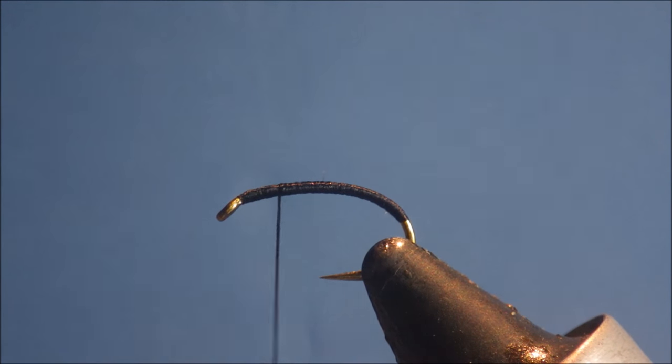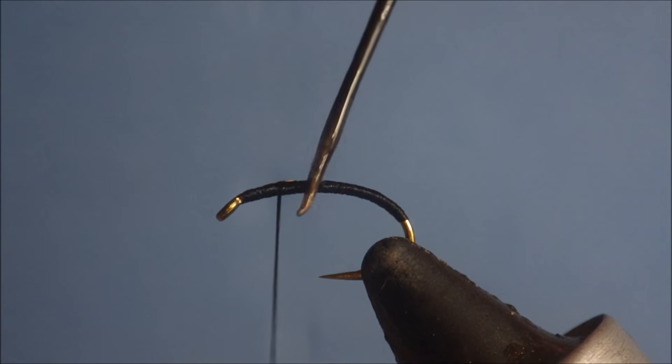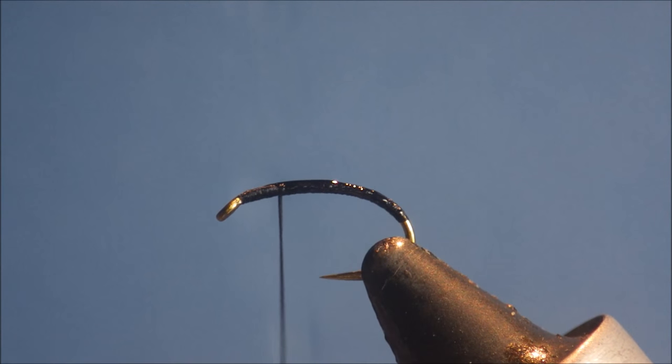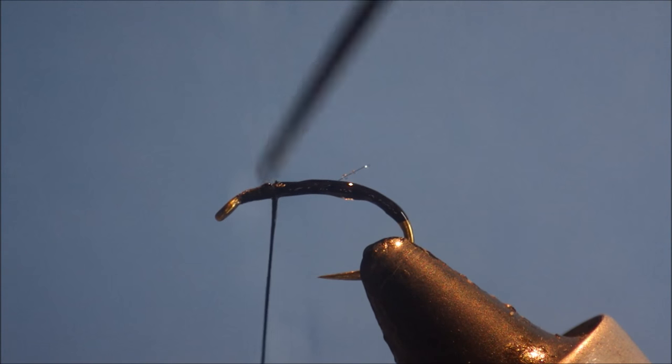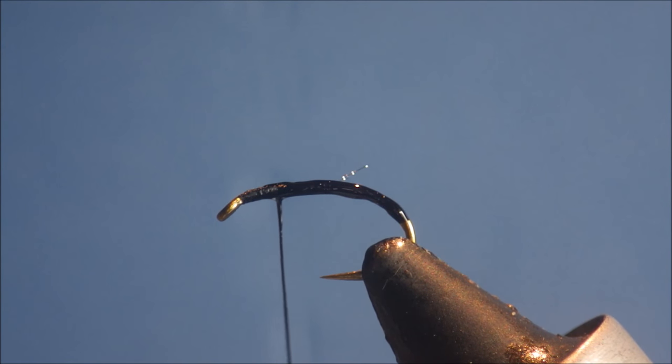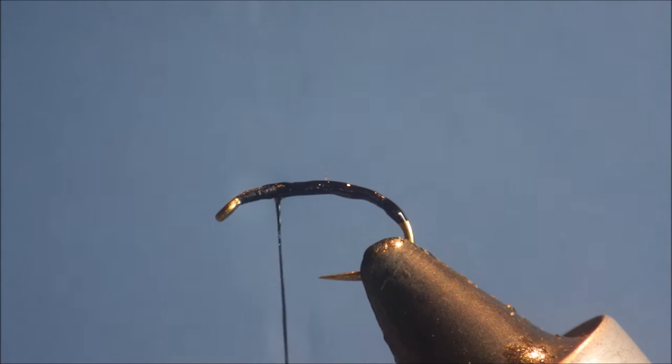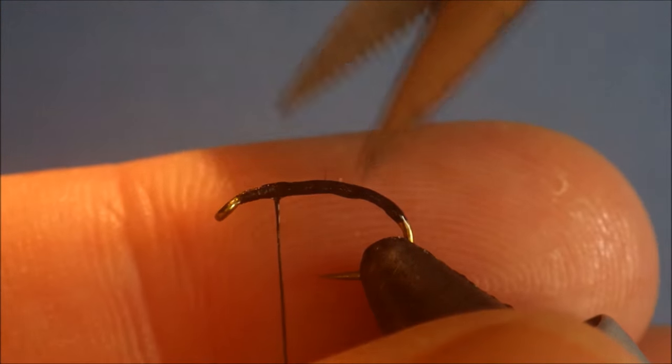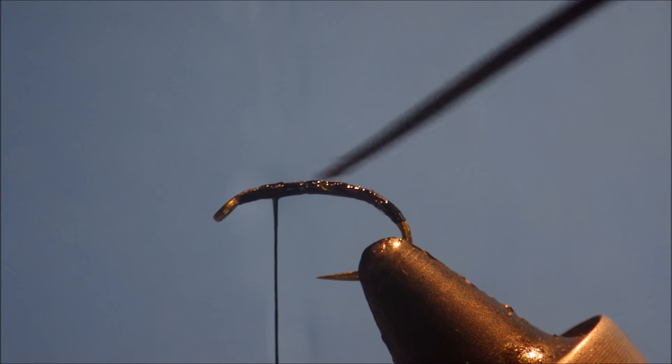Then I'm going to take a little bit of fine head cement. I've thinned it down a little bit. I'm just going to give the thread a wee coat, just to sort of protect it. Just a wee frayed piece of thread or something like that. Just give that a couple of seconds to soak in.